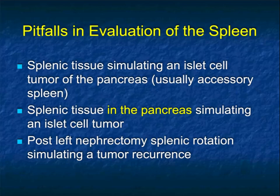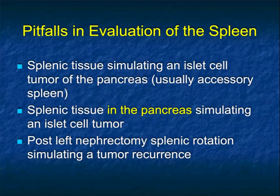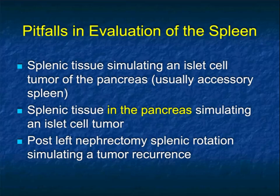One key pitfall is that splenules near the tail of the pancreas — sometimes intrapancreatic — can be confused with neuroendocrine tumors, particularly on arterial phase imaging. Rotation of the spleen in patients with left nephrectomy can simulate recurrence in the left renal bed, though recognizing the spleen for what it is should prevent this error. Splenic lesions in general are challenging; the majority of incidental lesions are benign, but we do see lymphoma, metastatic melanoma, hematomas, and hemangiomas.